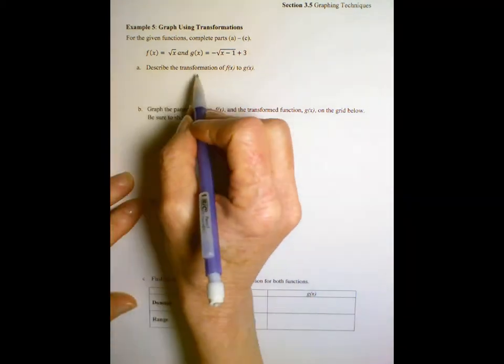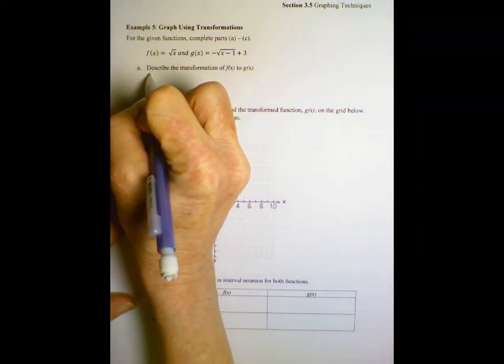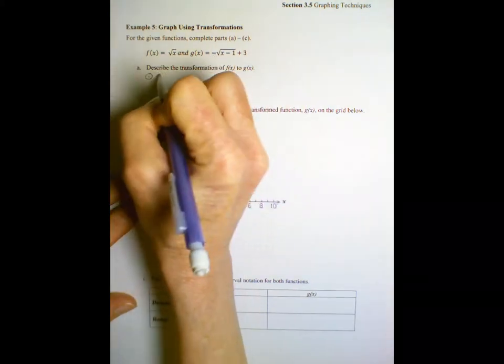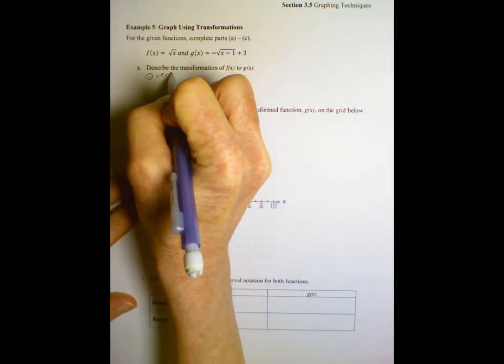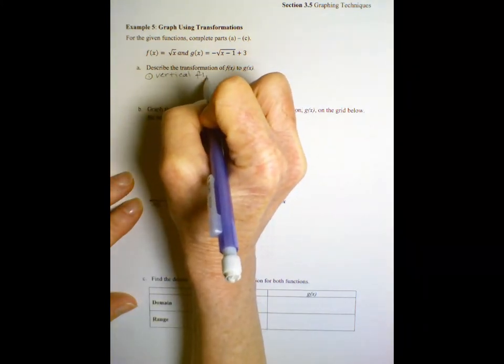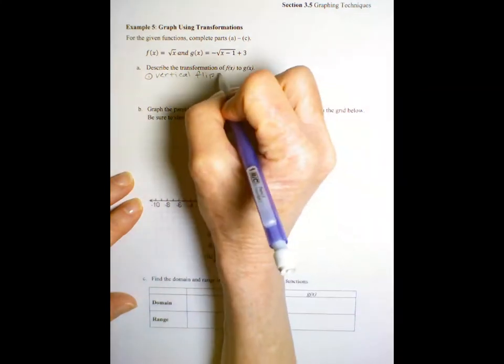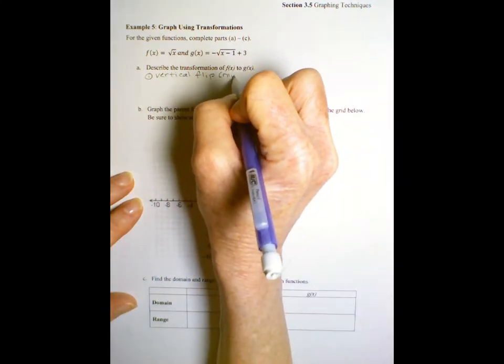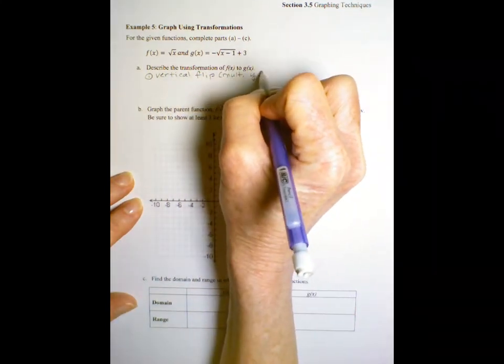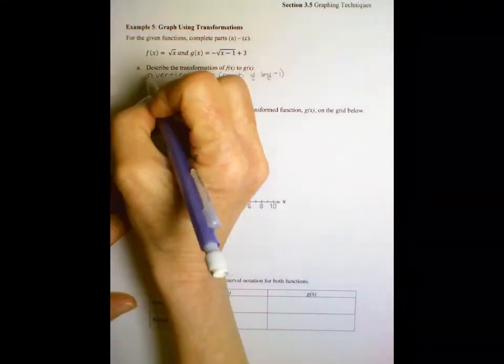So the transformation from this parent function to this, what do we see? The first thing we see is that negation on the outside, outside meaning it's vertical, and it's a vertical flip or vertical reflection, whatever you want to call that, and vertical affects y. What we would do is multiply y by negative one to get that flip to happen.